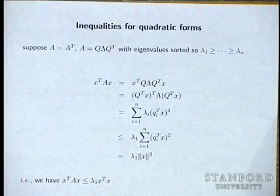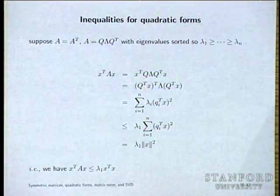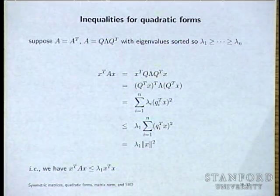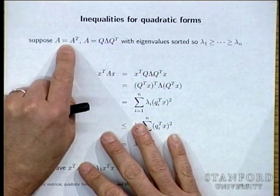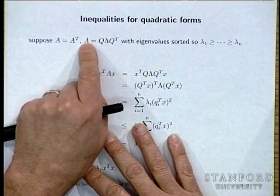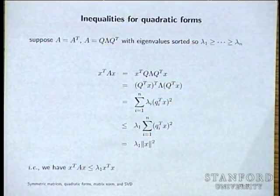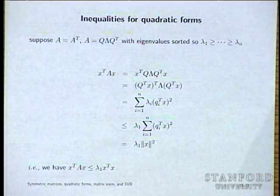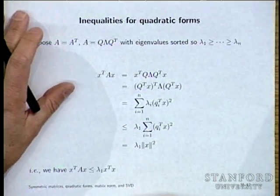Now let's get a feel for what X transpose AX looks like. If A equals A transpose, you can diagonalize it with an orthonormal basis of eigenvectors: A equals Q lambda Q transpose, with eigenvalues sorted largest to smallest. This only makes sense because symmetric matrices have real eigenvalues — for a general real matrix the eigenvalues need not be real, so sorting them would make no sense.